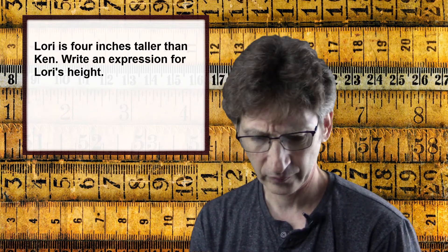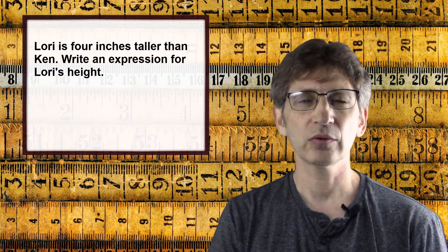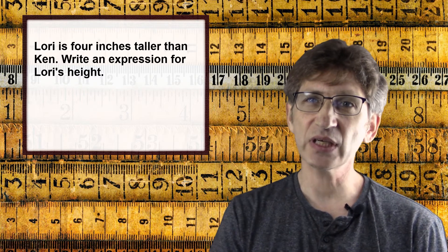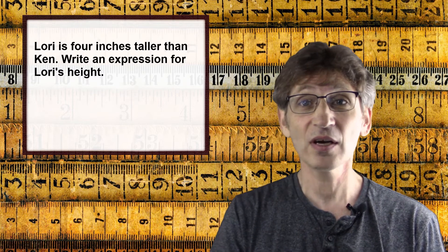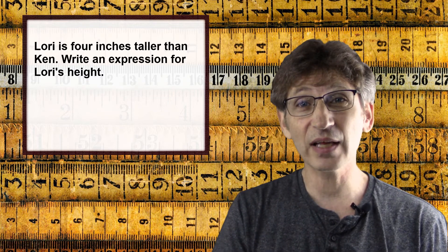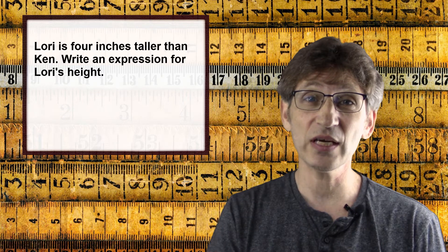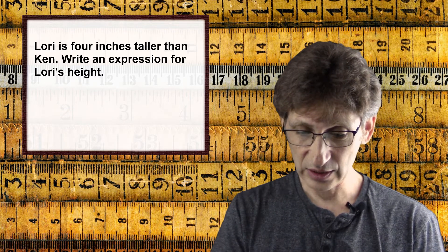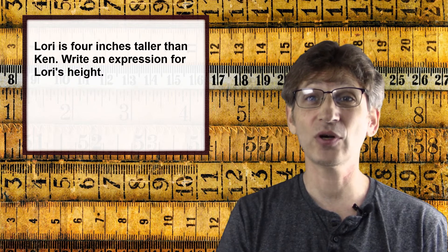Now let's look at our last situation. Lori is four inches taller than Ken. Write an expression for Lori's height. This is a little different from the previous two situations where a variable was given. In our daily lives when we're using math to model situations, we're very rarely given a variable to use — we have to make one up. A variable is simply a letter we use to represent an unknown quantity. The unknown here is Ken's height, because Lori is four inches taller than Ken, so I'd need to know how tall Ken is to figure out how tall Lori is.